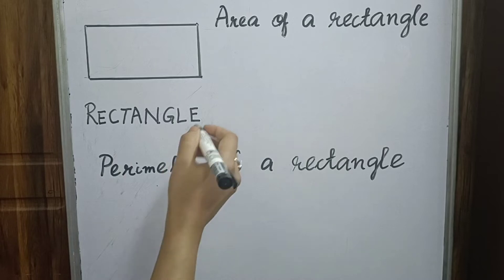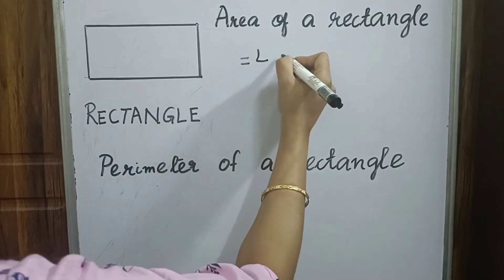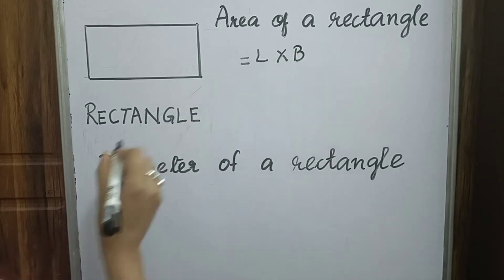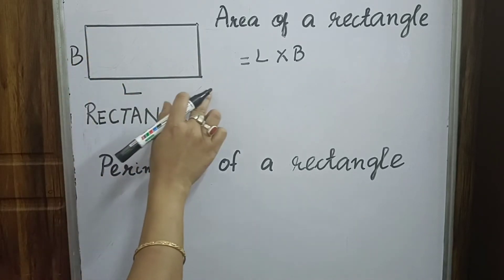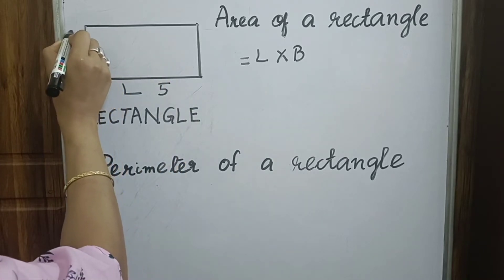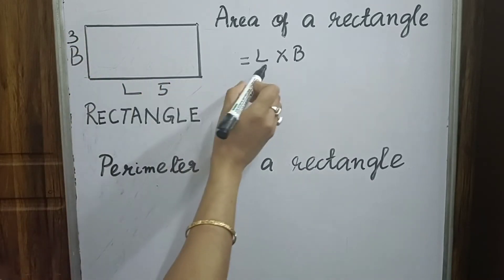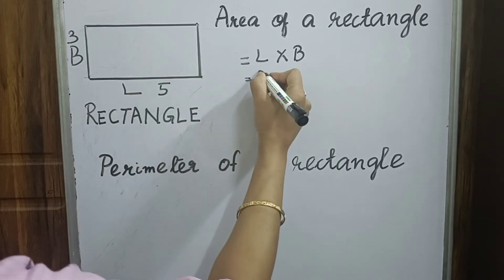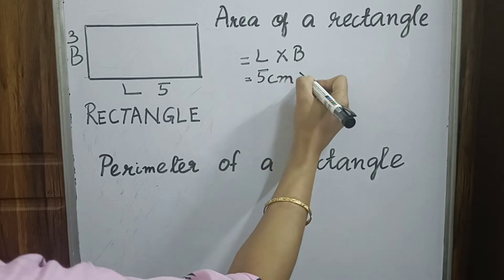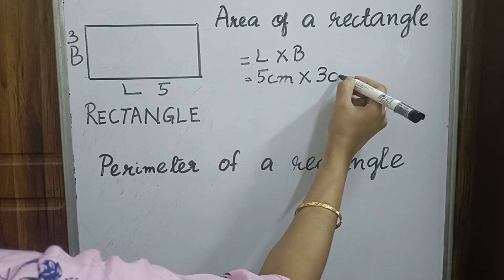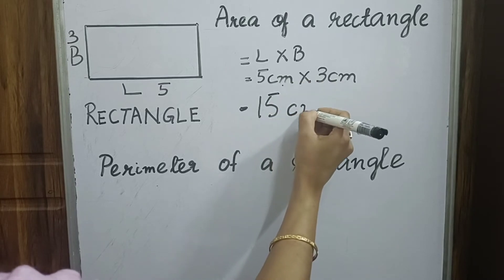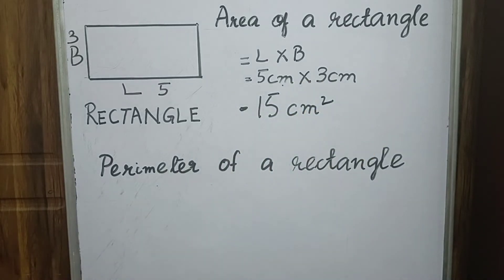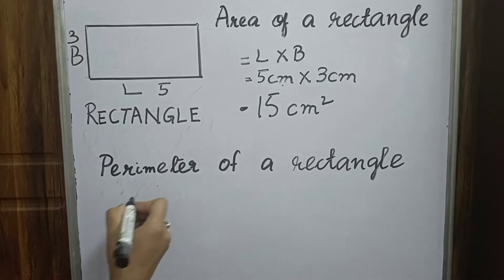The area of a rectangle equals length into breadth. This is the length of the rectangle and this side is called the breadth of the rectangle. So if the length of the rectangle is 5 cm and the breadth is 3 cm, then area equals 5 cm into 3 cm, which equals 15 cm².